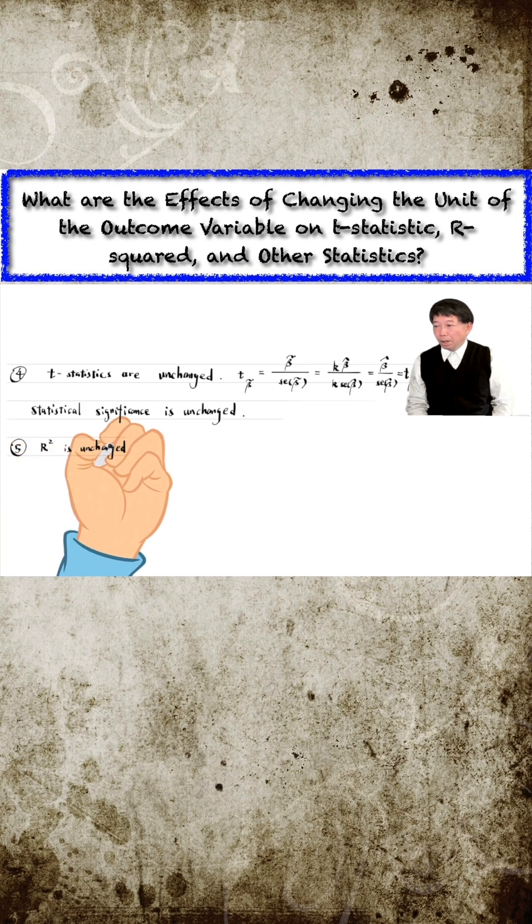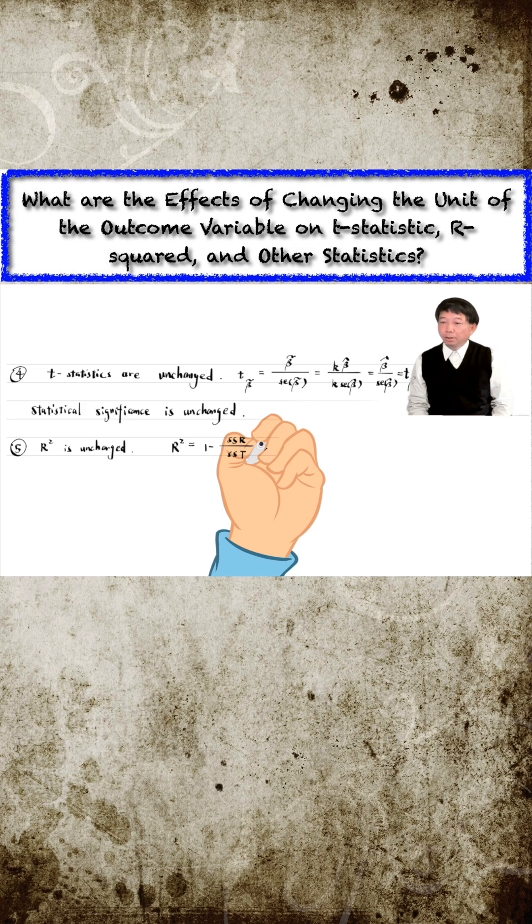r-squared is the goodness of fit that measures how much variation in the outcome variable can be explained by the explanatory variables in the model. The change in the unit should not affect it.